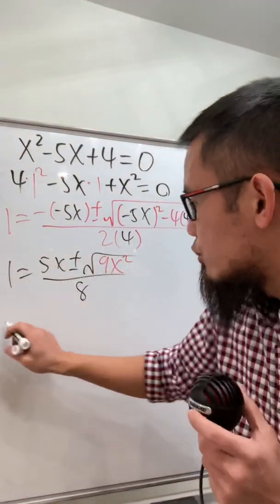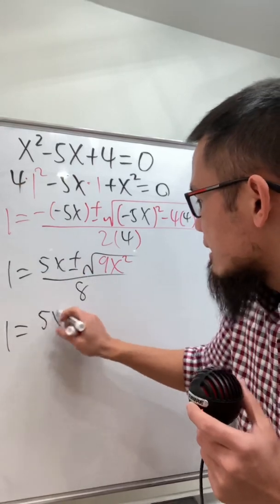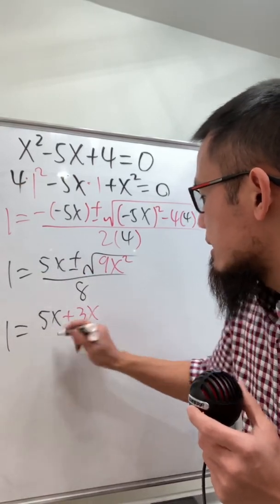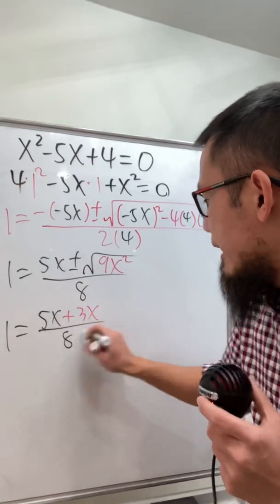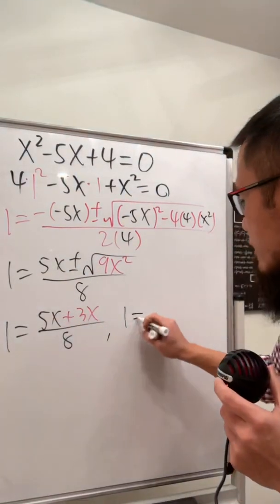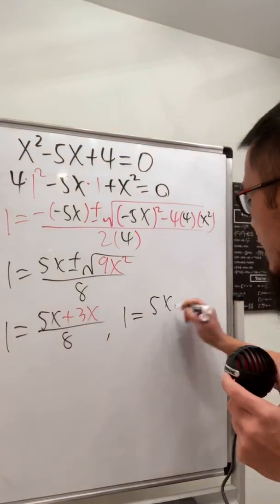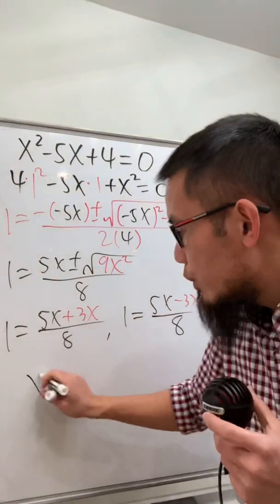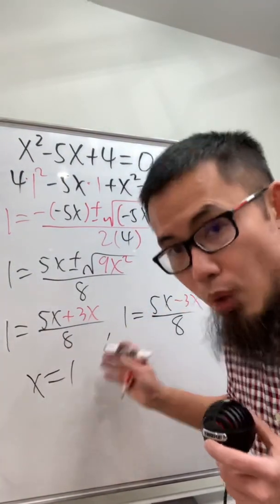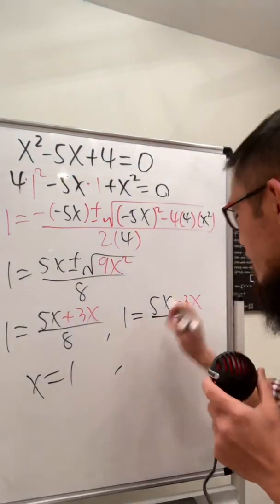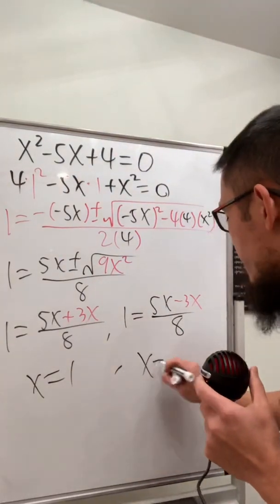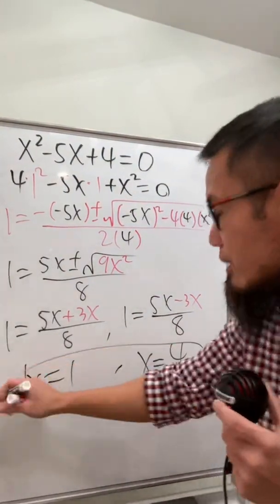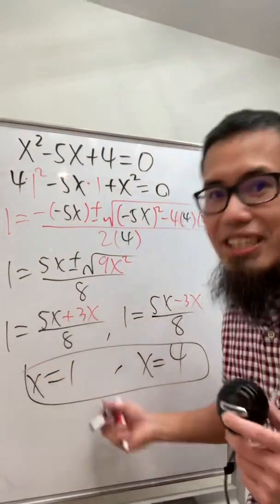So the first situation: 1 is equal to 5x plus 3x, then over 8. The other one: 1 is equal to 5x minus 3x divided by 8. From the first, we get x is equal to 1, and from the second, x will be equal to 4. Just go ahead and work them out and that's the answer. Done!